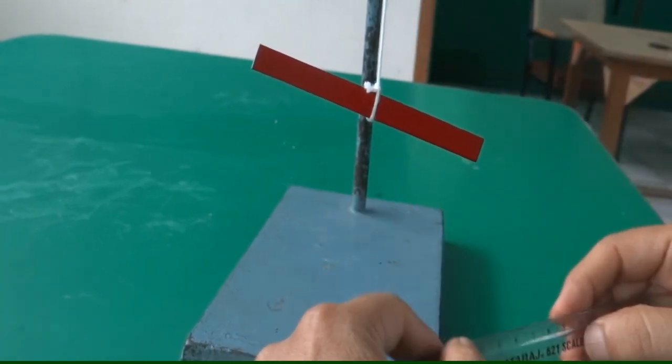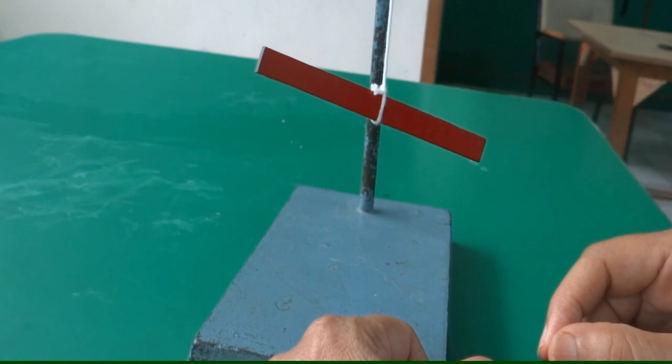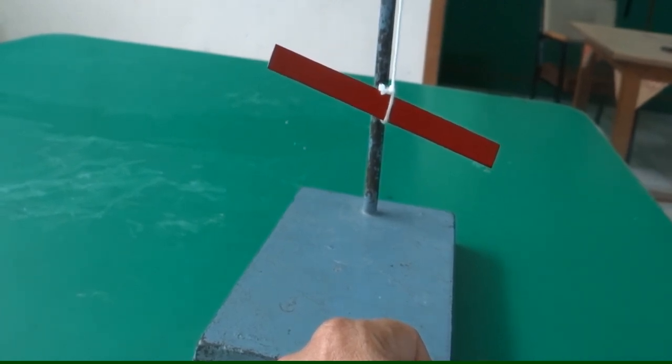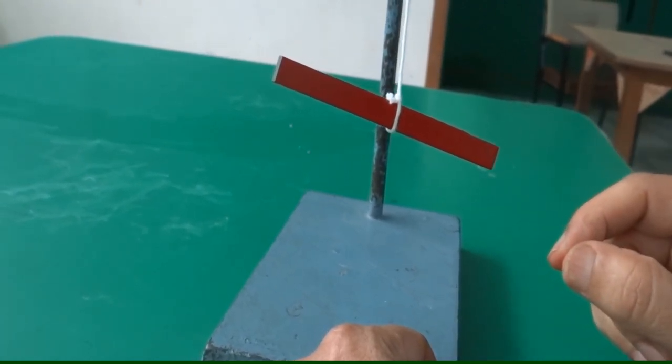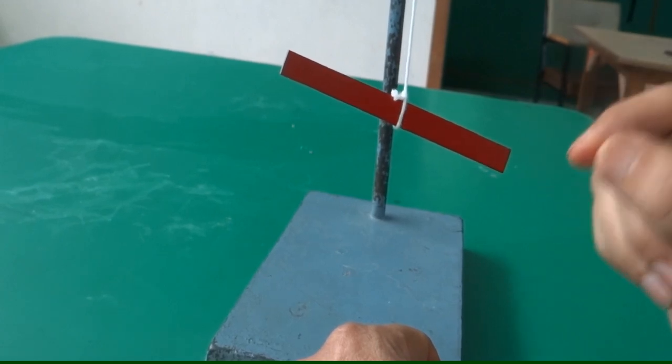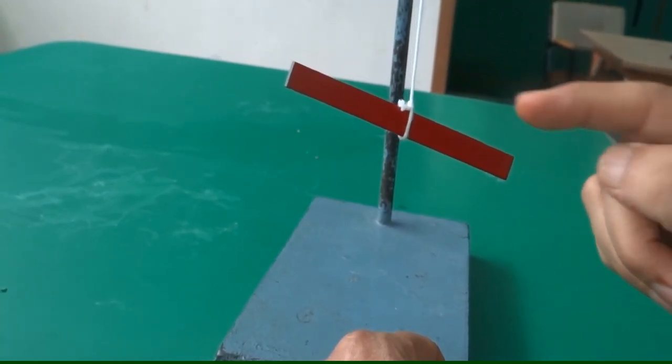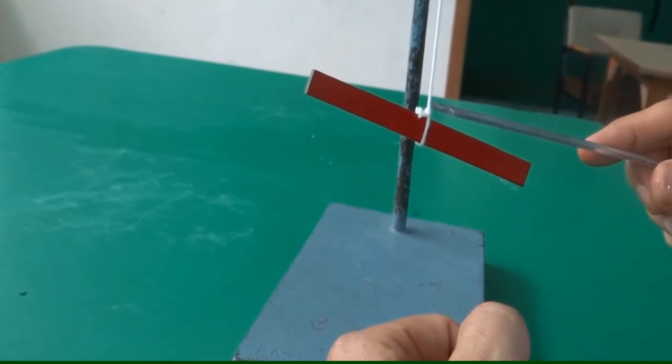So what happens: whenever you suspend a magnet at one particular place, its north and south poles—I mean the magnetic axis—always inclines with some angle from the horizontal line. You can check it here again.